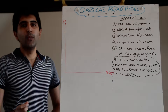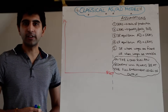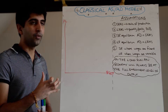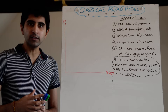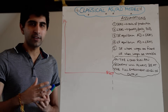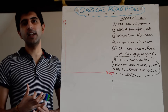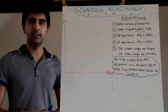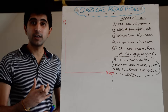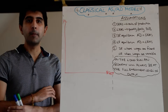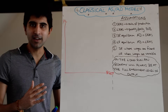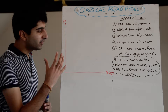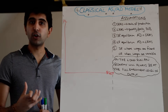When it comes to aggregate demand and aggregate supply, there are two different major schools of thought. You have the classical school of thought, which has a very unique interpretation of what aggregate supply looks like, and you have the Keynesian school of thought, which has its own interpretation. Both schools agree on aggregate demand, but because of this vast difference between aggregate supply, you have different ideas as to how the macroeconomy needs to be managed.